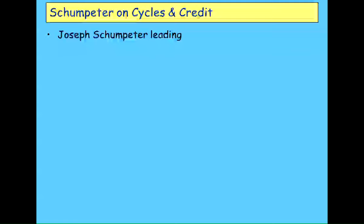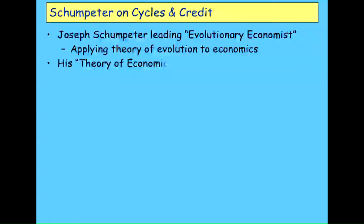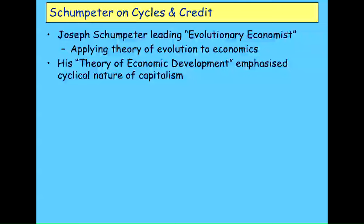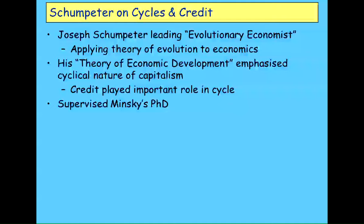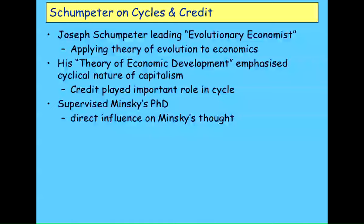I see the major influence on Minsky as actually being Schumpeter. As Joan Robinson once described, Schumpeter is Marx with the adjectives changed — similar analysis, different judgement on the value of capitalism. He was the leading evolutionary economist, the person who really brought the concept of evolution into economic theory. His book The Theory of Economic Development emphasised the role of credit in the cyclical capitalist system. He supervised Minsky's PhD, so it was a very direct influence on his thinking. Schumpeter rejected the neoclassical view of money — the veil over barter concept — and the belief that money is neutral.